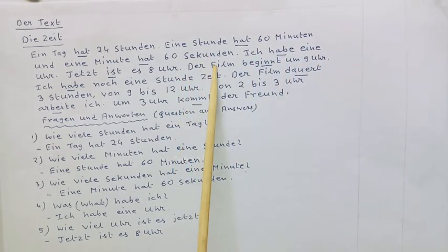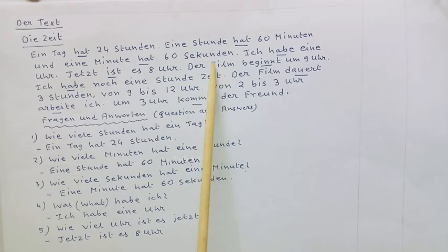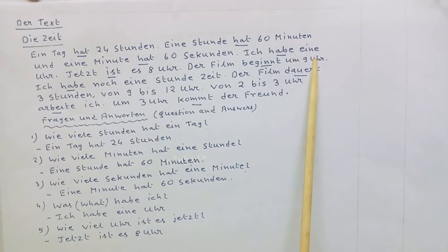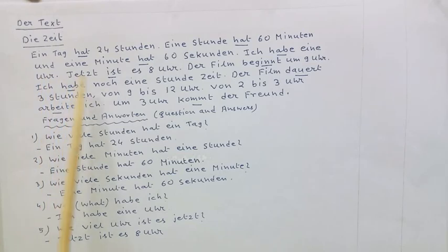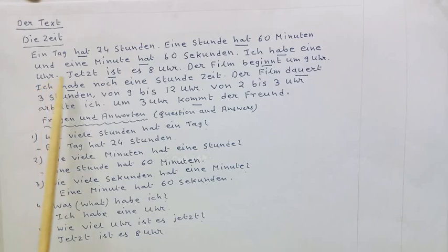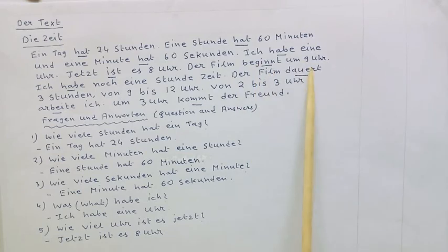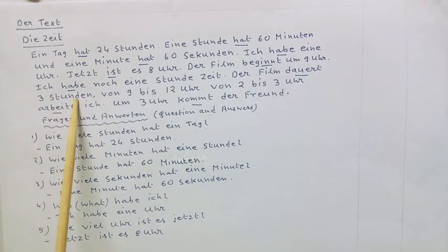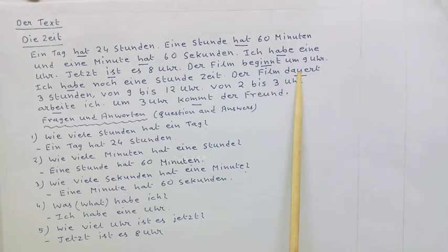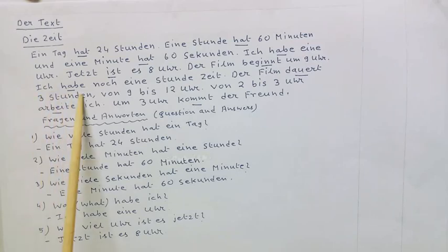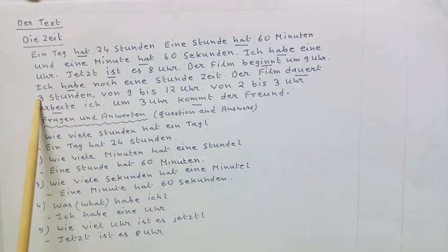Der Film beginnt — now this is third person singular. Um neun Uhr — at nine o'clock. Ich habe noch eine Stunde Zeit — I have still one hour time. Der Film dauert drei Stunden — the film lasts three hours, or the duration of the film is three hours. This is in third person singular.